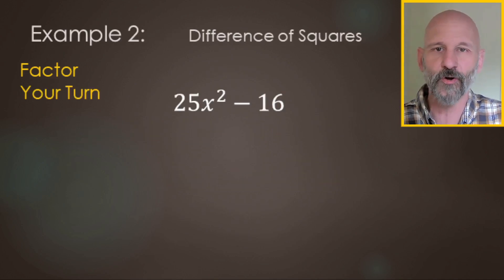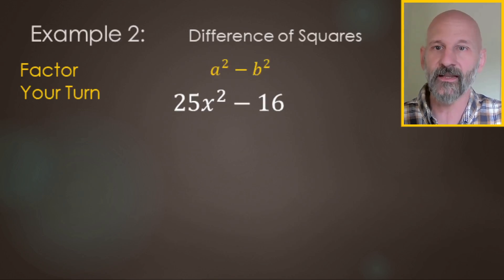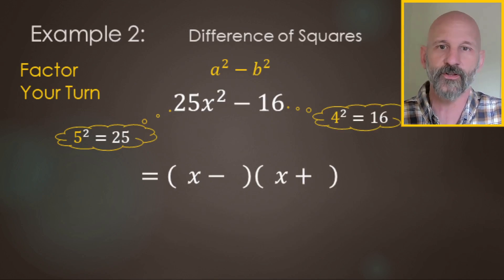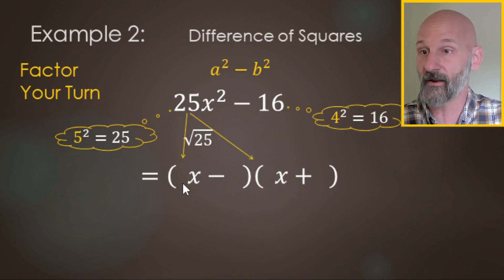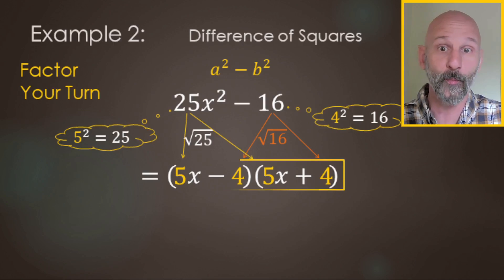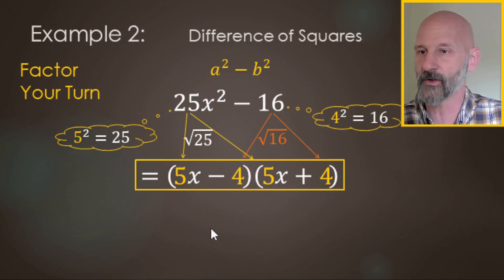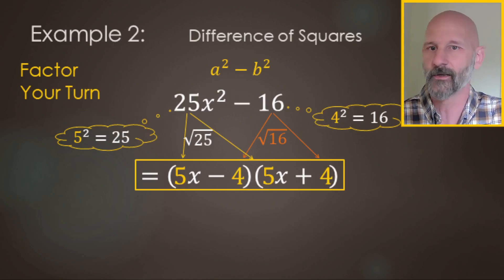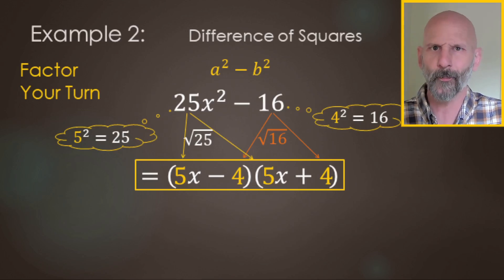Go ahead and try this one on your own — pause the video, then come back. Here we go: 25x² − 16 takes the difference of squares form. We have 5 squared (= 25) minus 4 squared (= 16). So square root of 25 gives 5 and 5 for the firsts; square root of 16 gives 4 and 4 for the lasts. The answer is (5x + 4)(5x − 4). The outers give 20x and the inners give −20x, so 20x − 20x leaves no x term — that's why there's no middle term.